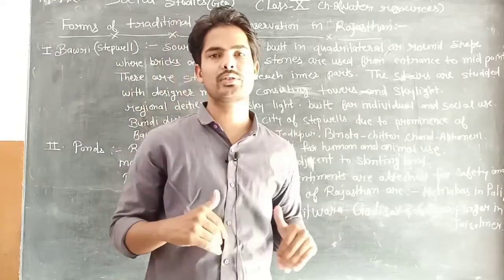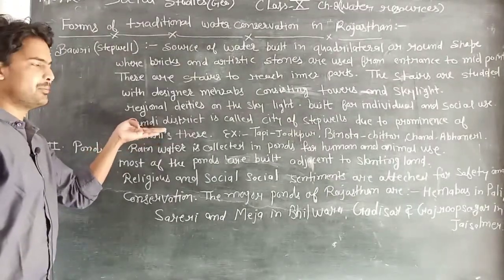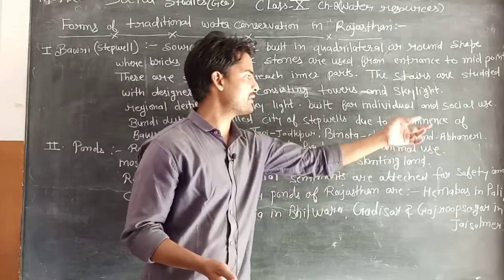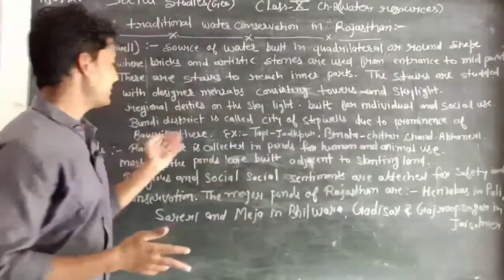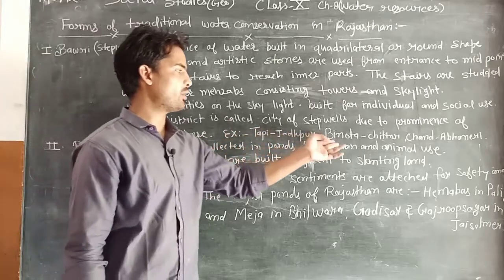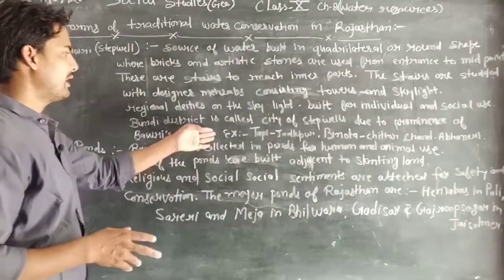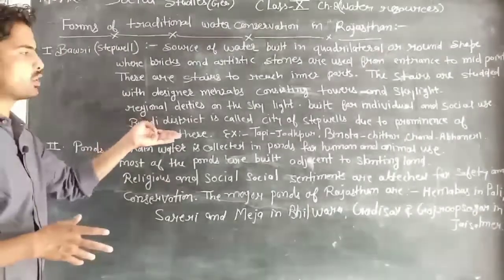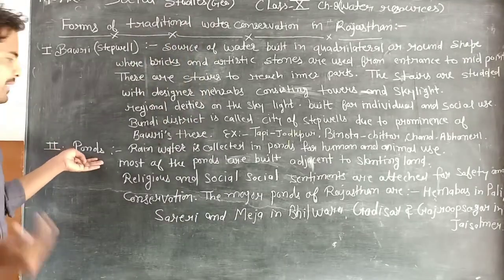Bundi is called the 'Step Well City' due to the prominence of step wells (bawdis) there. Examples of famous bawdis are: Tapi Bawdi in Jodhpur, Ranota Bawdi in Chittorgarh, and Chand Bawdi in Abhaneri. In exams, a very short question often asked is: which city is called the Step Well City and why? The answer is Bundi, because of the prominence of bawdis there.